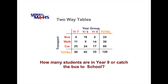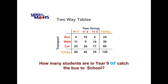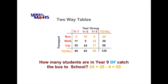The next question asks how many students are in Year 9 or catch the bus to school. Unless told otherwise we use the inclusive OR — it can be students that fit one category or the other or both. We look down the Year 9 column: 35 students. Then the number who catch the bus: 24. We add those together but must subtract 4, because the 4 students belonging to both Year 9 and the bus row would otherwise be counted twice. That gives us 55 students who are in Year 9 or catch the bus to school.